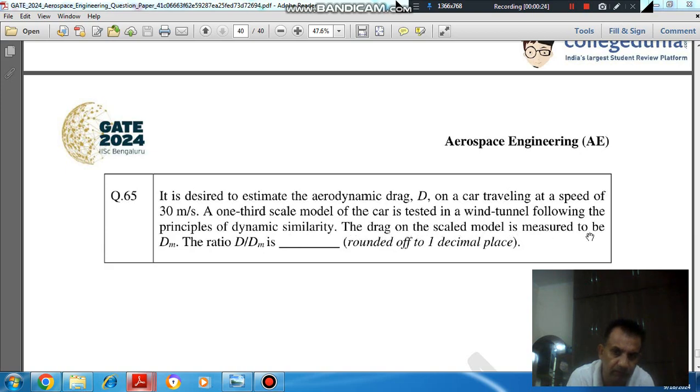The drag on the scale model is measured to be Dm. The ratio of D by Dm is dash, rounded off to 1 decimal place.